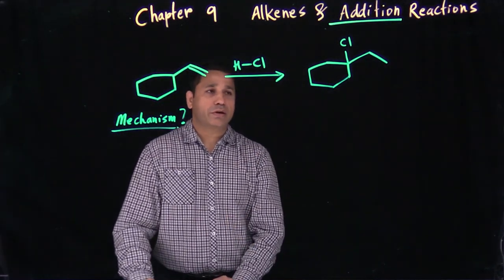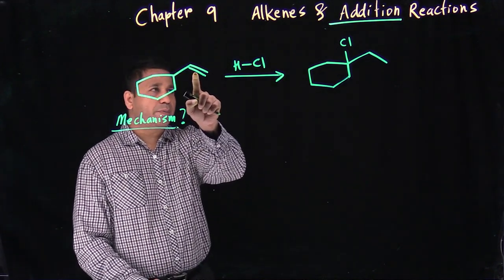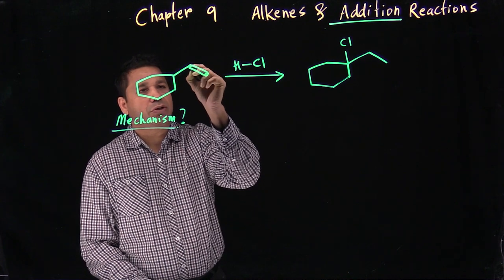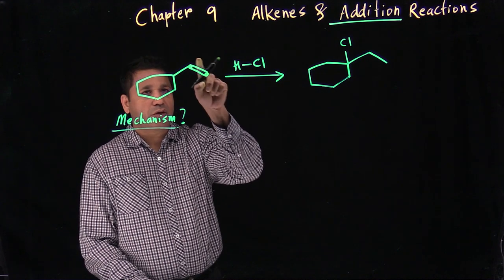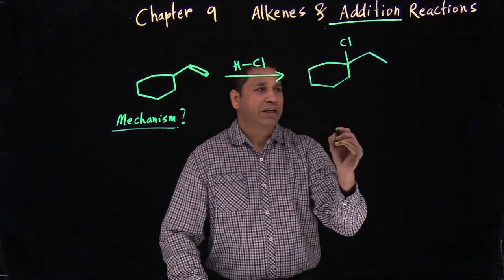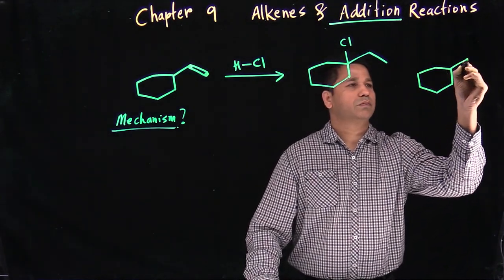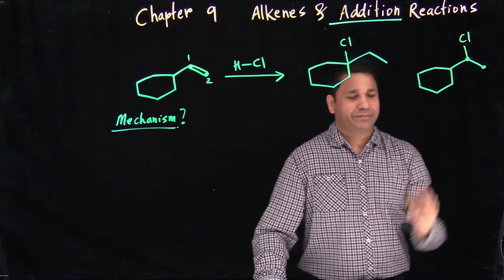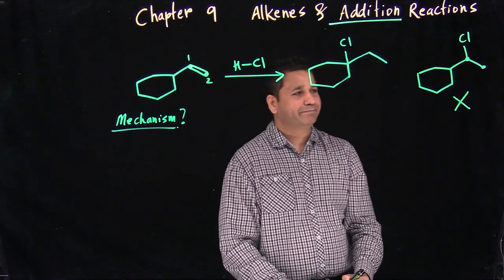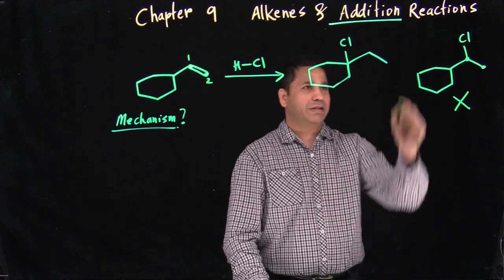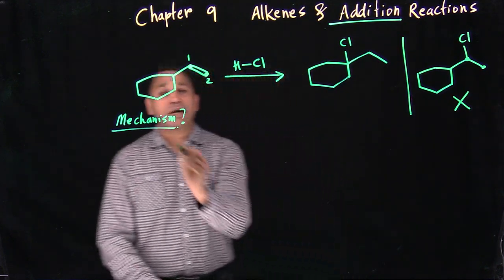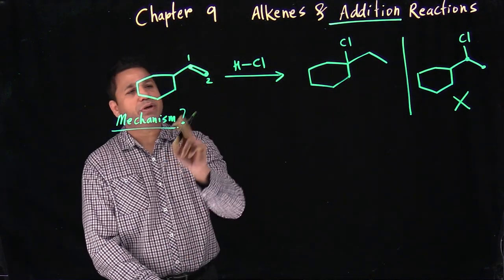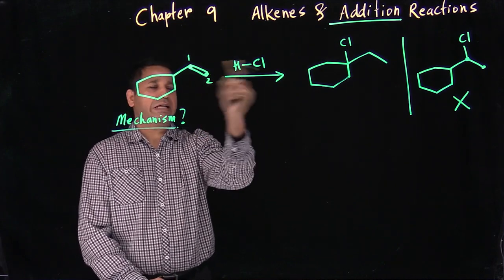Now let's look at a variation where an unusual product is given. We expect Cl on carbon-1 and H on carbon-2 from Markovnikov's rule, but a different product is shown. To understand this, we write the mechanism: the double bond picks up H (step 1), giving a carbocation on carbon-1 and Cl⁻. But the chlorine ends up on a different carbon in the given product.